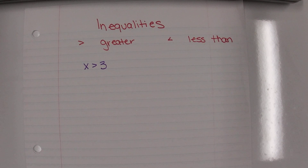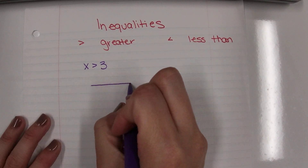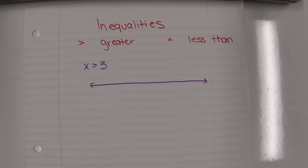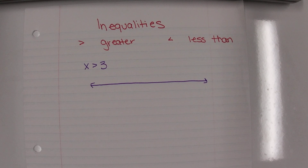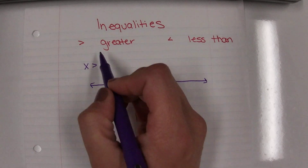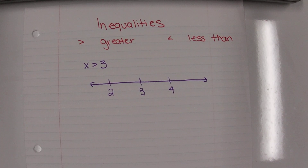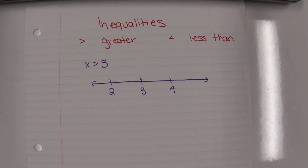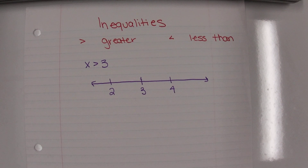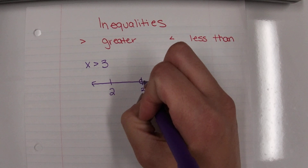So there are new ways to represent these answers, because no one wants to write down every number greater than three — you'd be doing that for the rest of your life. We can represent these by graphing them on a number line. I want you to always have three digits on your number line: the number given goes in the middle, with a number on the right and a number on the left. The greater than symbol means x can't actually be three, so we use an open circle right at three.